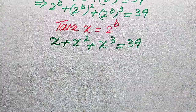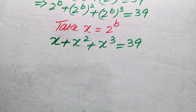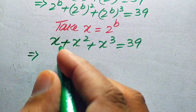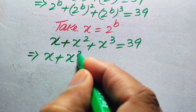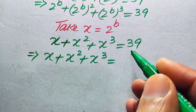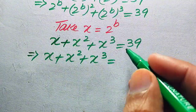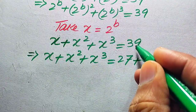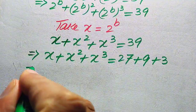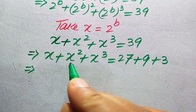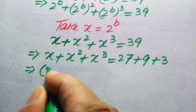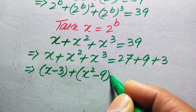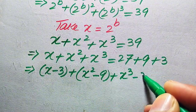We need to solve this cubic polynomial by factoring. We have x plus x squared plus x cubed equals 39. We write 39 as 27 plus 9 plus 3. Then we pair 3 with x, 9 with x squared, and 27 with x cubed, giving us: x minus 3, plus x squared minus 9, plus x cubed minus 27.